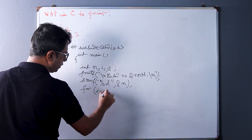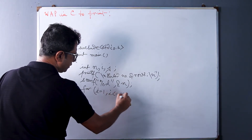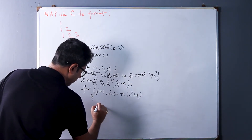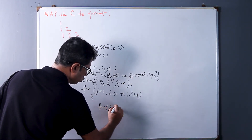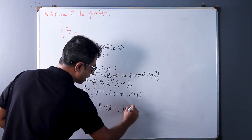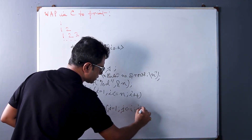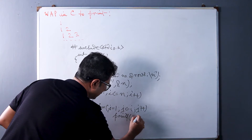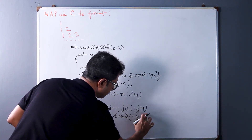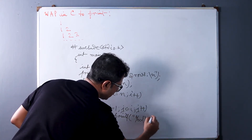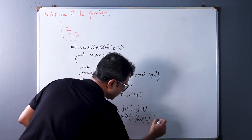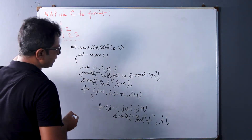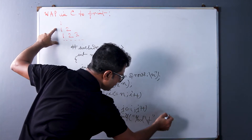Now we come to the logical section. The outer loop is: for i = 1; i <= n; i++. Inside, the inner loop is: for j = 1; j <= i; j++. After that we write: printf("%d\t", ...) — using the tab escape sequence.